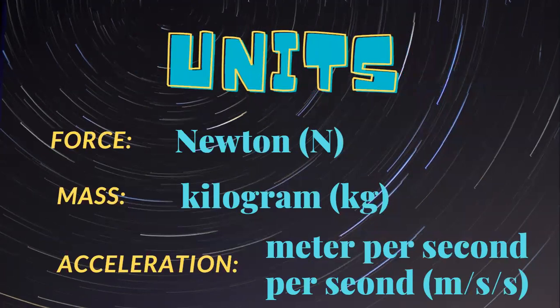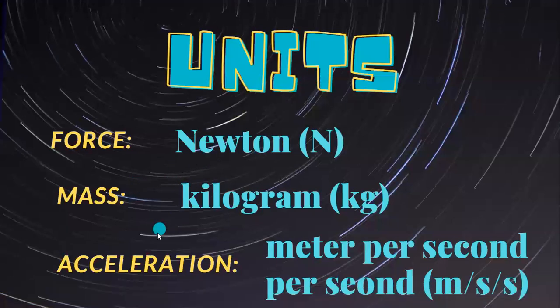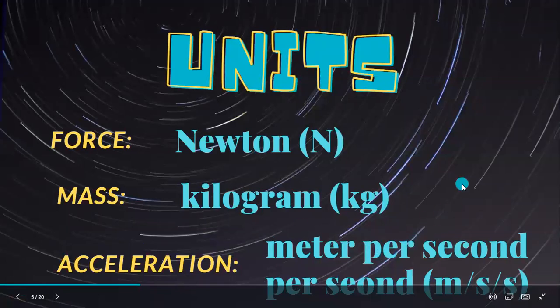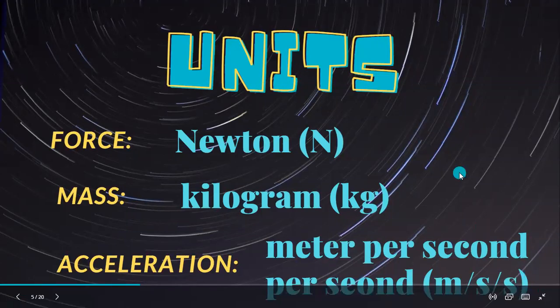So first we're going to look at the units that we're going to use because we are going to, after we learn how this law works and the different formulas and mathematical equations we can set up, we need to make sure we understand what units go with what. So for force, know that it is always newtons, mass is kilograms, and acceleration is meter per second per second. We could also write that m/s squared, but I will be using meters per second per second today.